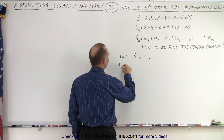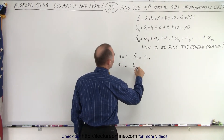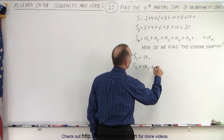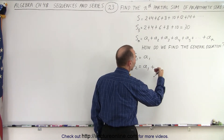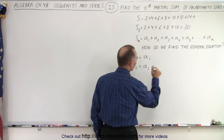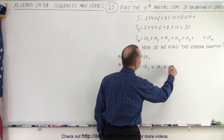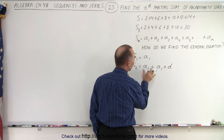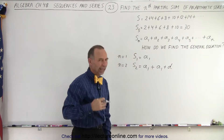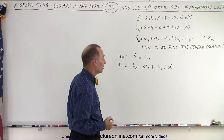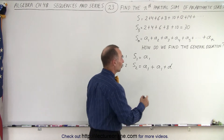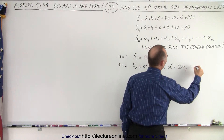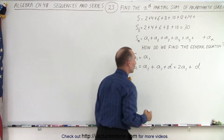When n is equal to 2, S sub 2 is equal to a sub 1 plus the common difference — that's the next term, a sub 2. So a sub 2 is a sub 1 plus the common difference d. In other words, S sub 2 is equal to 2 times a sub 1 plus 1 times d.